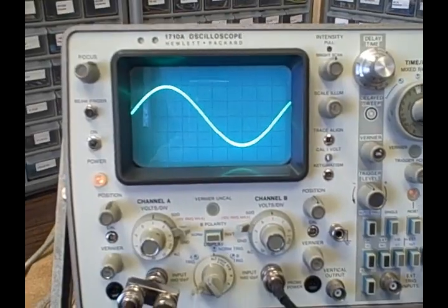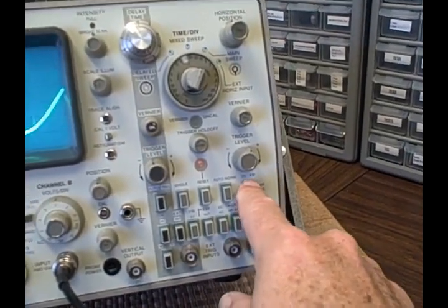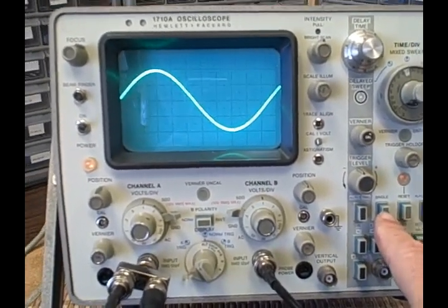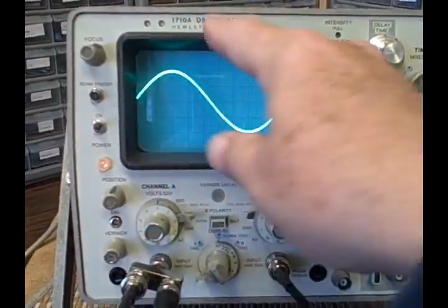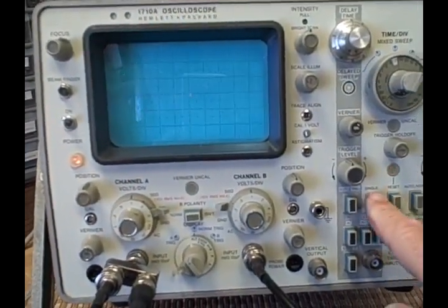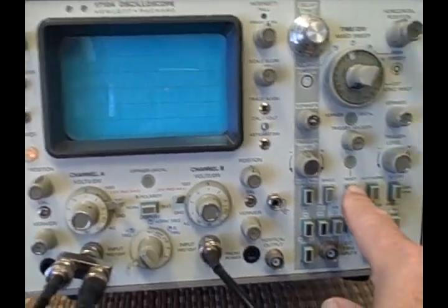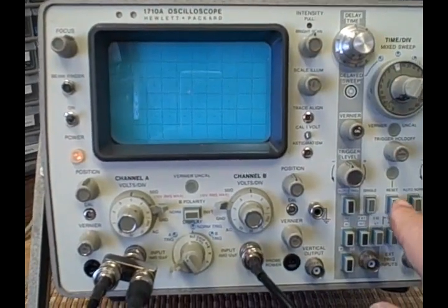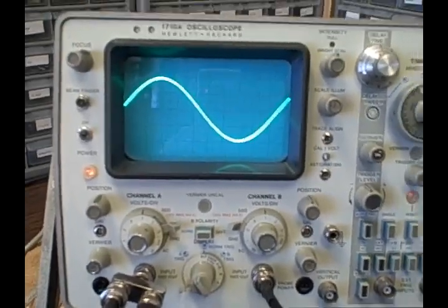We already tested the times 10 magnification, that switch here, times one times ten for horizontal. We have a single sweep with a reset. We're doing automatic sweep, so if I went to single, you can see as I hit the reset it allows one sweep to happen across the screen. Not quite sure why you'd need that, but it's there.